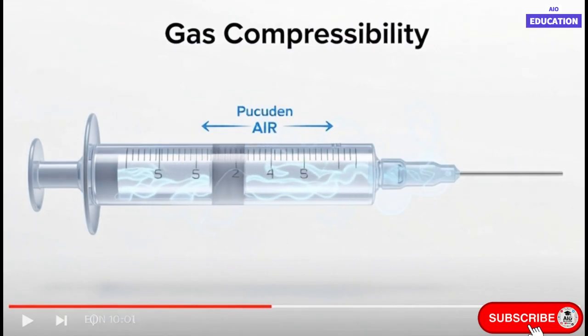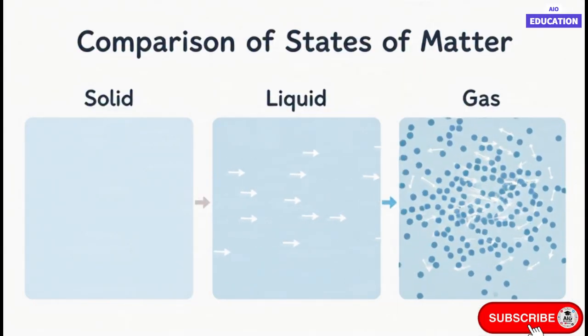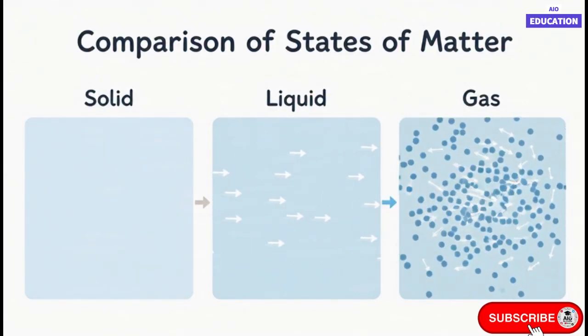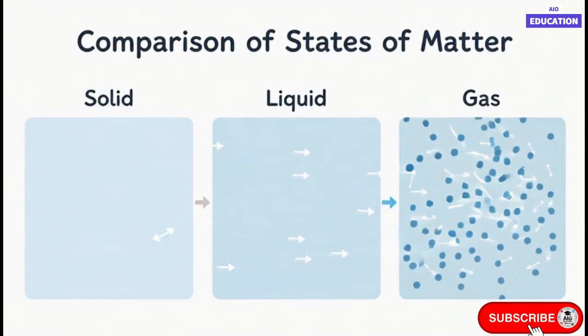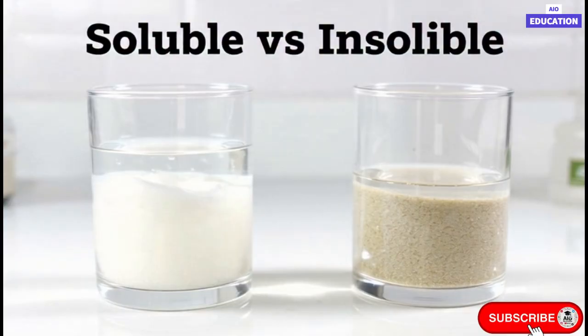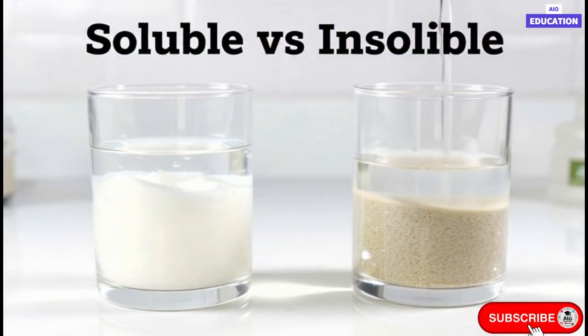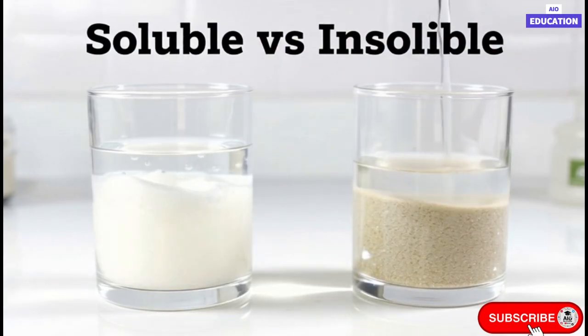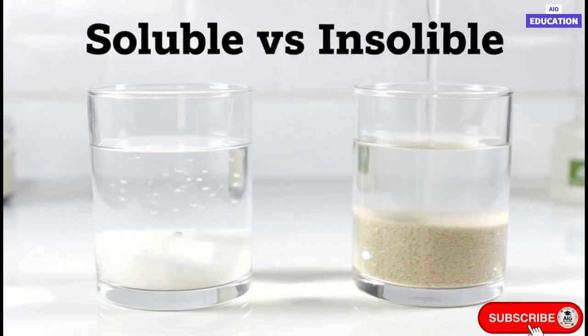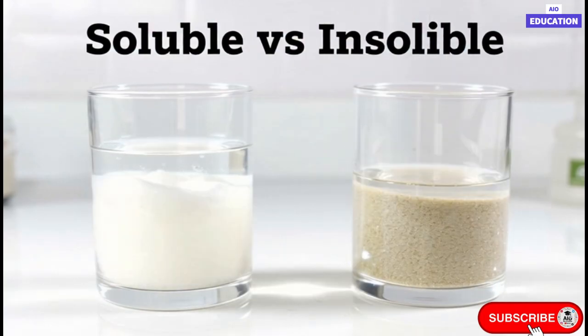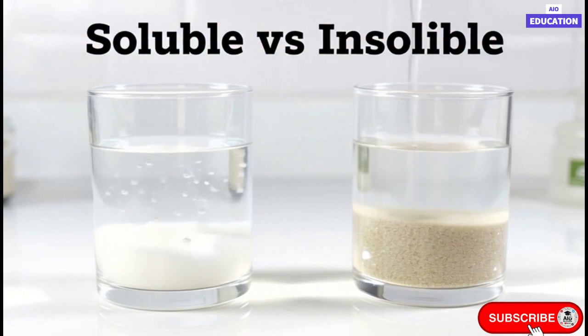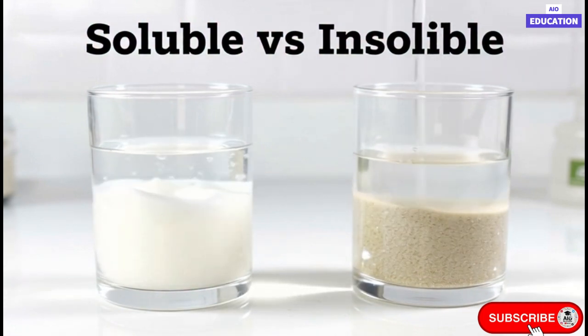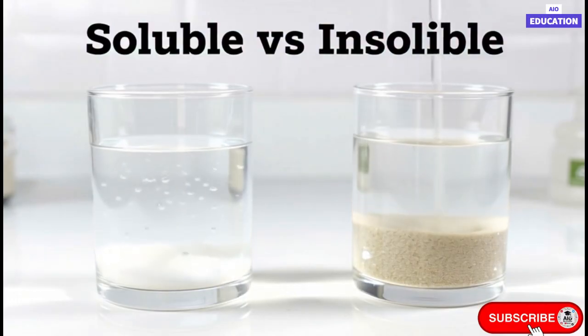Another interesting property of matter is solubility. When we dissolve substances like sugar or salt in water, the water level rises slightly at first, but after complete dissolution, it slightly drops. This happens because the particles of sugar or salt fit into the inter-particle spaces of water. However, if we add sand to water, it doesn't dissolve because the sand particles are too large and there's no space for them to fit into the water structure. Thus, the solubility of a substance depends on the arrangement and nature of its particles.